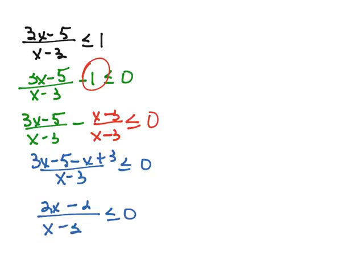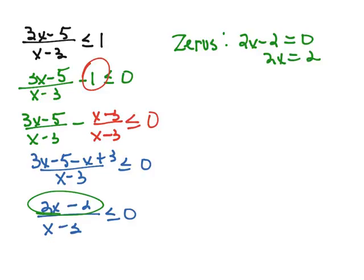So we want to go back and we want to find the zeros so we can place those on the number line. And the way we find the zeros of a rational function is we look at the numerator. So we're going to take 2x minus 2 and set that equal to 0. We get 2x equals 2 and so x is 1.